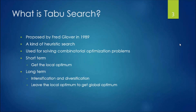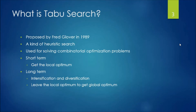If we run Tabu Search for only a short time or use only a shorter memory concept, we get the local optimum. For the long term, intensification and diversification strategies should be included, and in that case we mostly get the global optimum. The global optimum is not guaranteed, but in most cases we get very close to it. Tabu Search also involves some sort of memory.